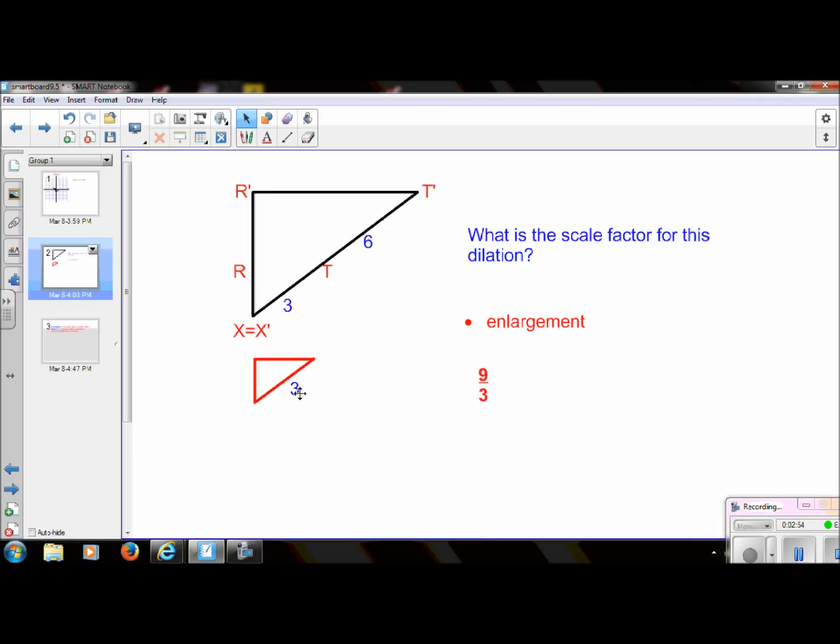And it's over 3. I've listed the larger number on top because it's an enlargement. Then again, this little red triangle was 3, so that simplifies to 3. So putting this back, this dilation was an enlargement with a scale factor of 3.